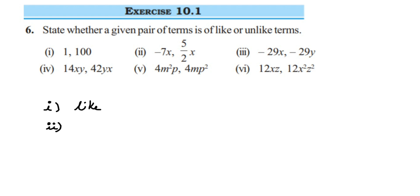The second one: we have -7x and 5/2x. The -7 and 5/2 are numerical coefficients — we should not consider those. We check the variable part: we have x in both, and there is no other variable apart from x, so yes, it is also a like term.